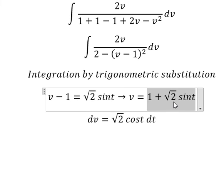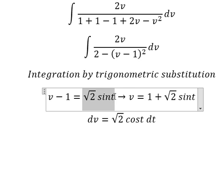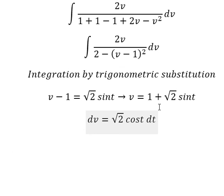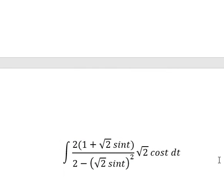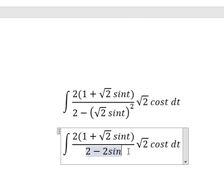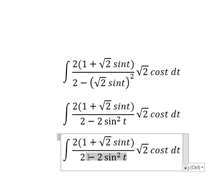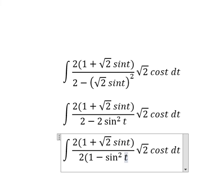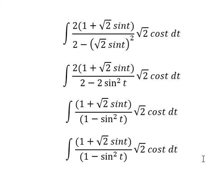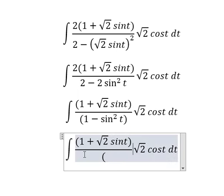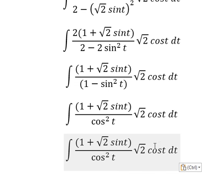For v, we substitute this expression. For v minus 1, we substitute this one. For dv, we substitute accordingly. This gives us 2 sin²(t). Number 2 and number 2 cancel by factorization. Then 1 minus sin²(t) we change to cos²(t), and we simplify cos(t) on the numerator and denominator.